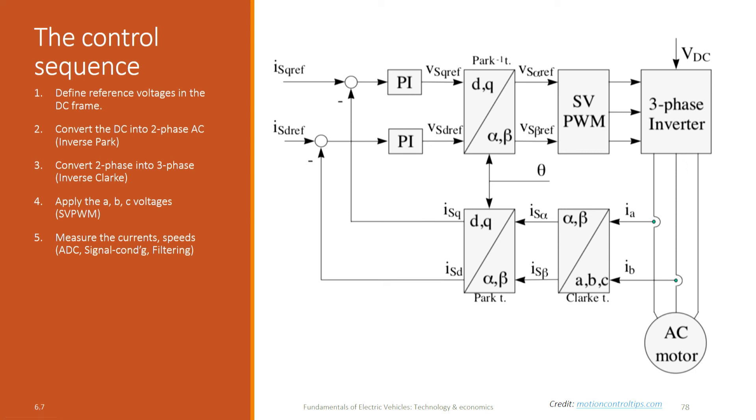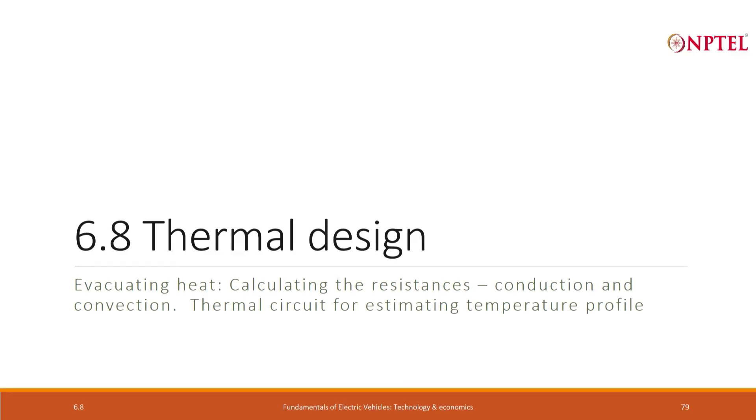So we get the actual values of ID and IQ to the controller, whereas the controller has already decided that it wants so much current to flow - ID and IQ - based on whether it is in MTPA or in field weakening. And it compares and says this is what I wanted, this is what is happening, are they the same or is there a gap? And if there is a gap, that error is taken into the PI control loop and corrected, and again a fresh set of VD and VQ gets applied. So the error is estimated and then we correct it using the PI. So this is all there is to the controller.